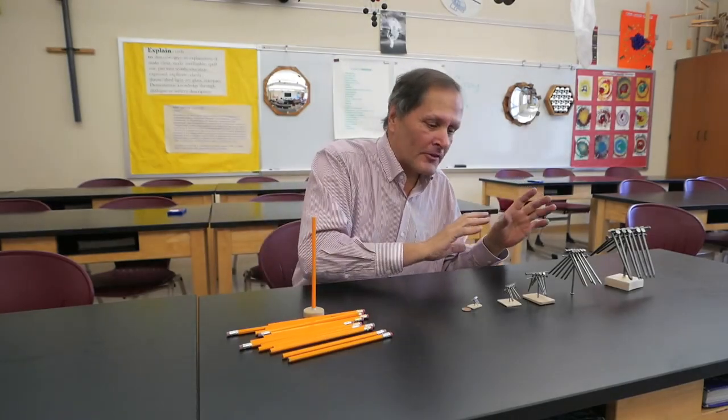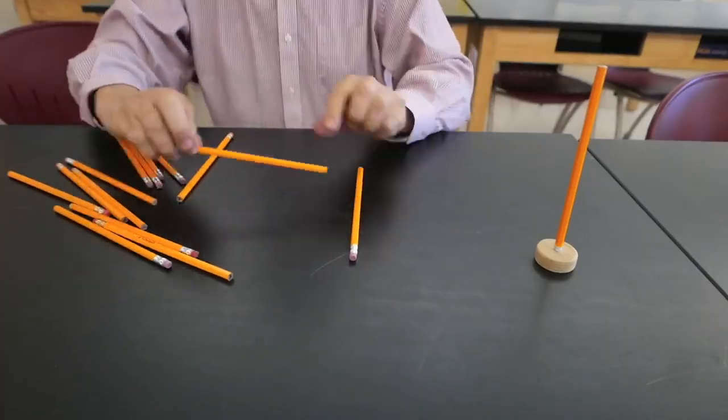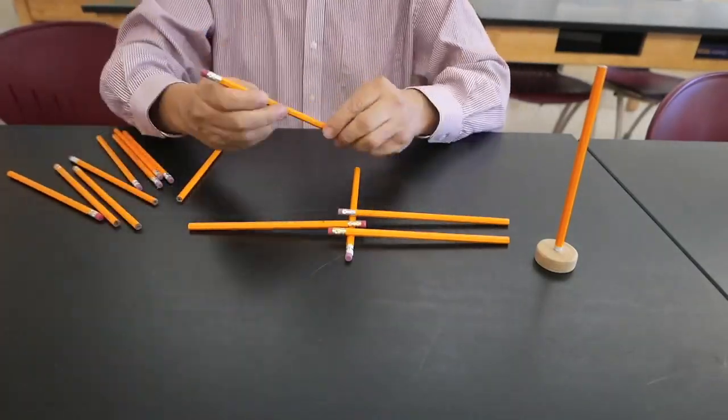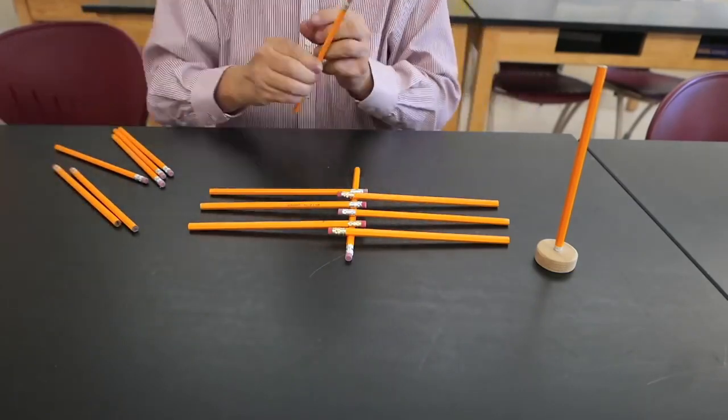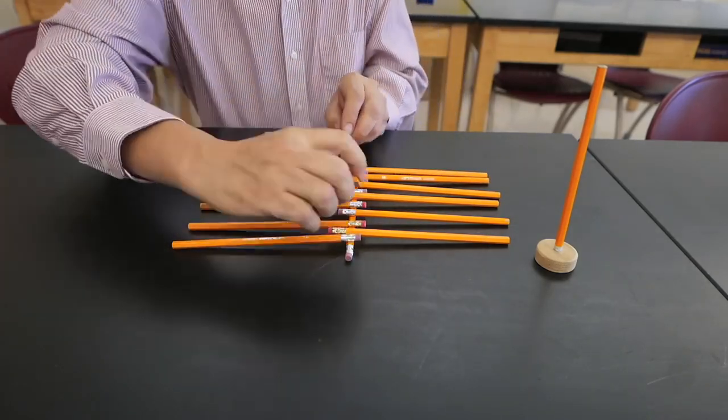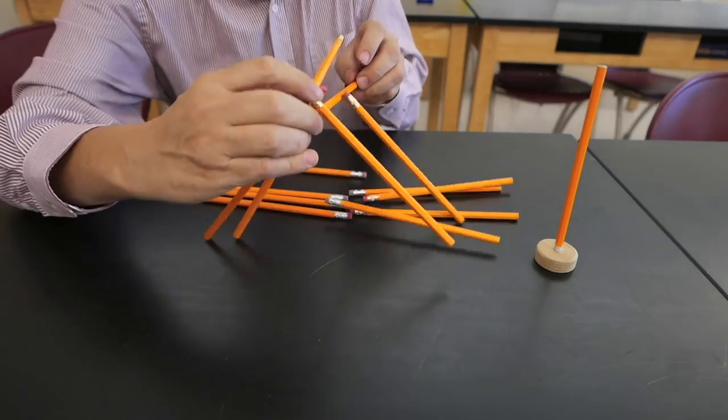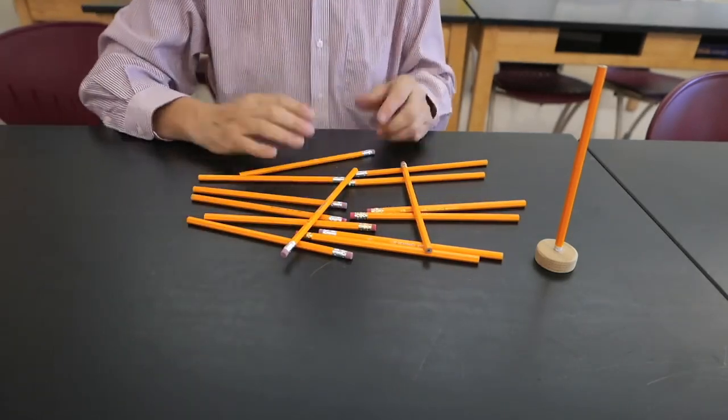Now that we've found that we can do it with various sized nails, I think it's time to try it with pencils. I'm going to use the same type of arrangement. Lay one pencil down, and then stagger the other pencils on top of it. Lay a second pencil on top, try and pick it up. Well, that didn't work.